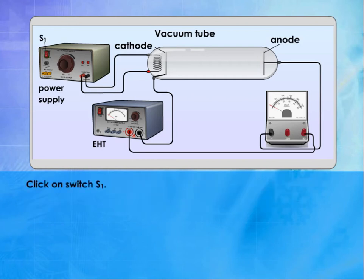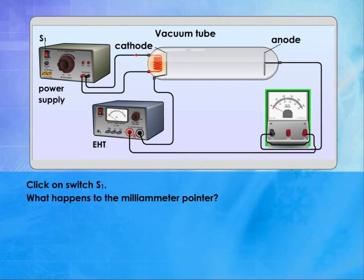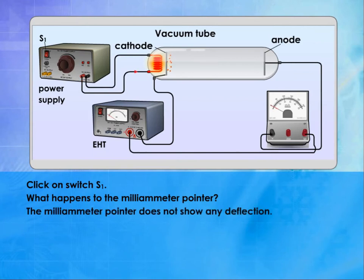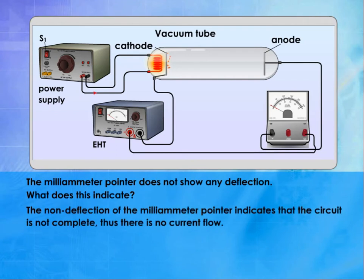Click on switch S1. What happens to the milliammeter pointer? The milliammeter pointer does not show any deflection. What does this indicate? The non-deflection of the milliammeter pointer indicates that the circuit is not complete. Thus, there is no current flow.